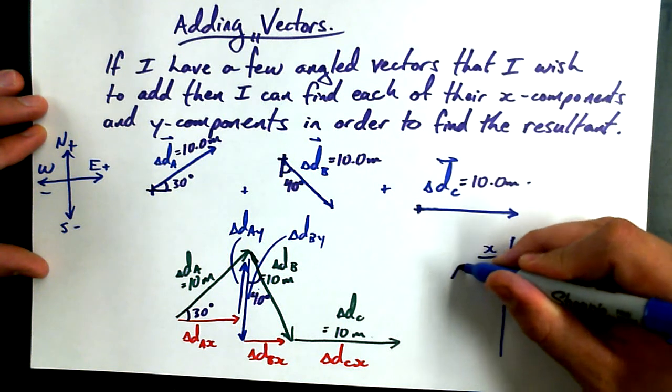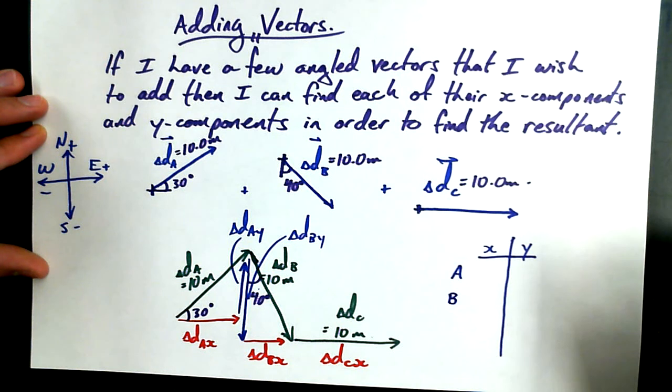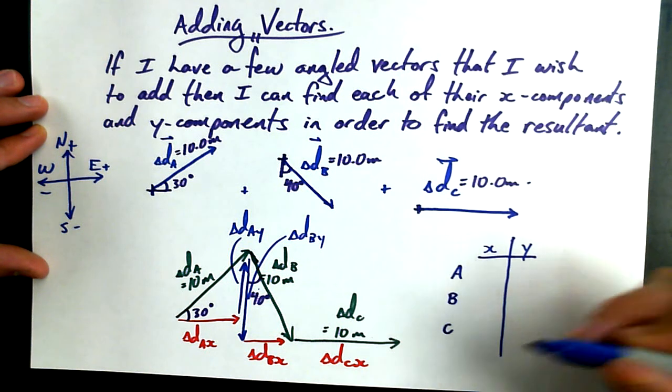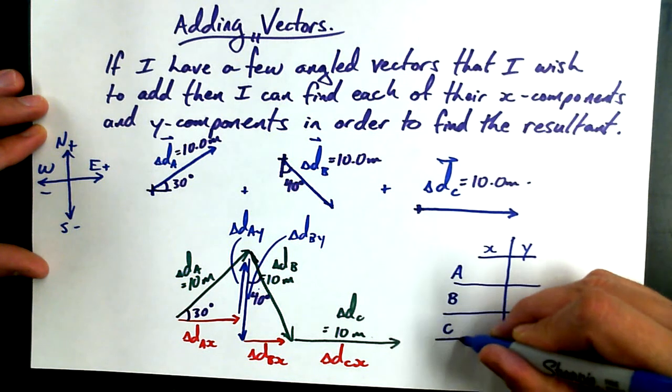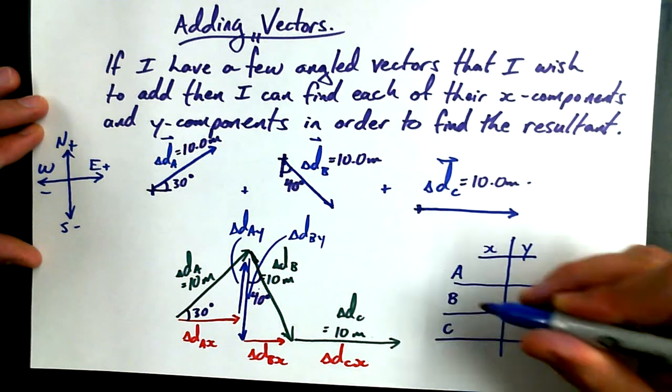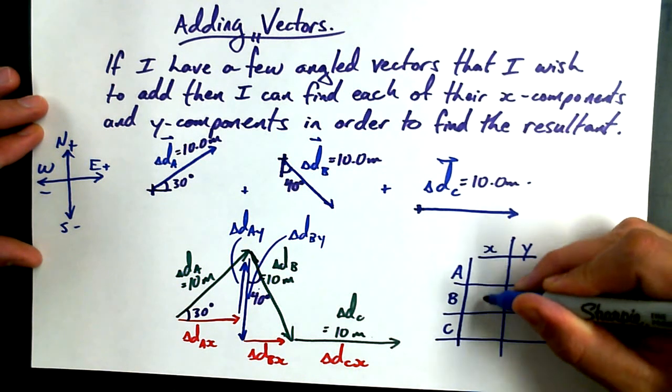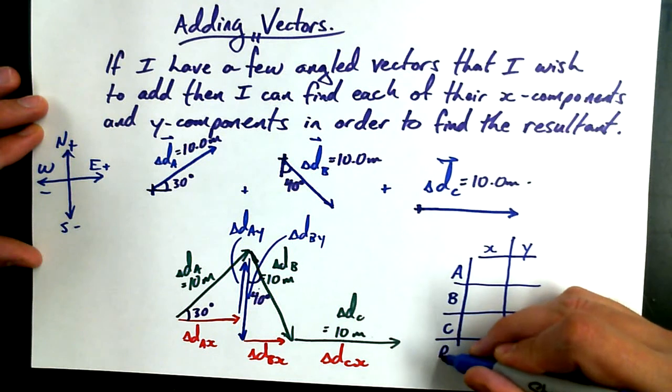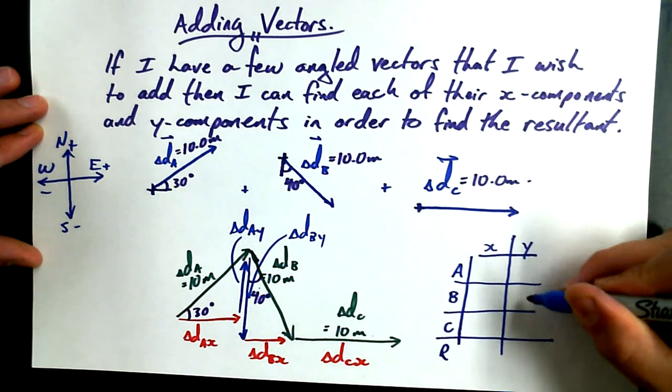So you're going to find the x component of vector A and the y component. The x component and y component of vector B. And the same for C. At the end, I'm just telling you what the game plan is. We're going to find the total for all the x's. So that's going to be the resultant for all the x values. And we're going to find the resultant for all the y values.